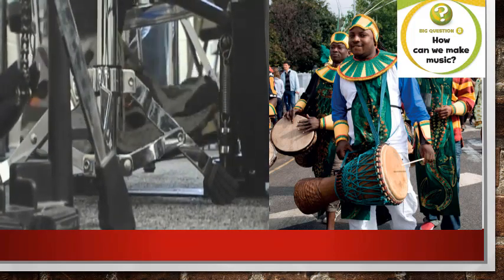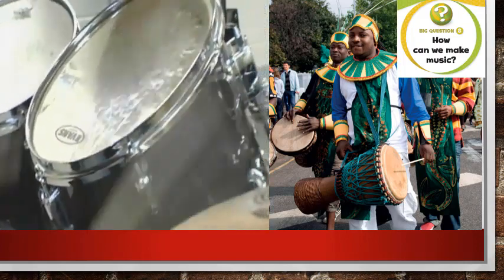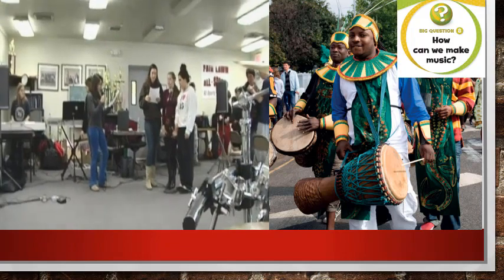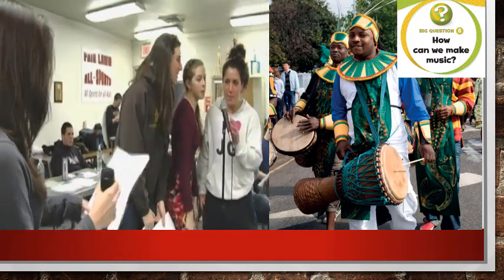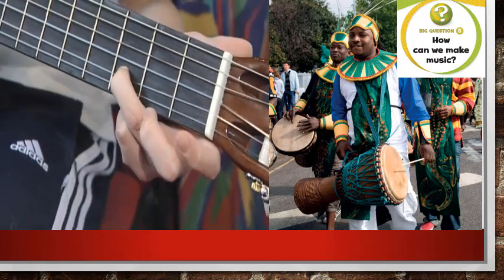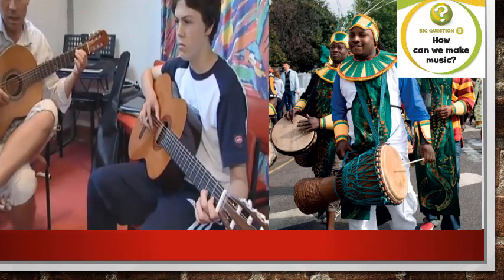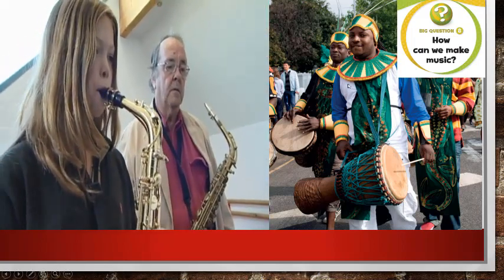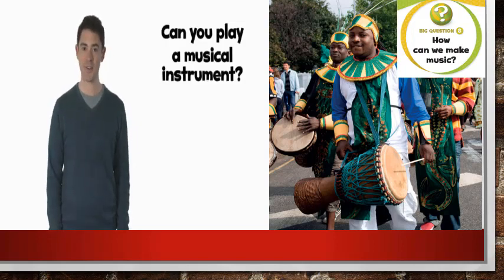This boy is playing a big drum kit — he's using drumsticks. There are lots of ways we can make music. These girls are singing, this boy is playing a guitar, and this girl is playing the saxophone. Can you play a musical instrument?